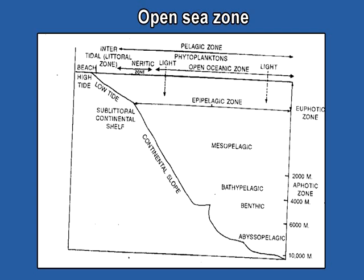The first zone of the aphotic portion has some light but it is not sufficient to carry out photosynthesis. The other two zones — the bathypelagic zone and the abyssopelagic zone — are dark and without any light, so no photosynthesis occurs in those areas.